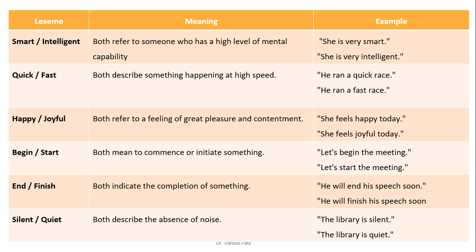Examples of synonyms: 'smart' and 'intelligent' both refer to someone who has a high level of mental capability. 'Quick' and 'fast' both describe something happening at a high speed — for example, 'he can run a quick race' and 'he ran a fast race.' 'Happy' and 'joyful' both refer to the feeling of great pleasure. 'Begin' and 'start' both mean to commence something. 'End' and 'finish' both indicate the completion of something. 'Silent' and 'quiet' both describe the absence of noise.